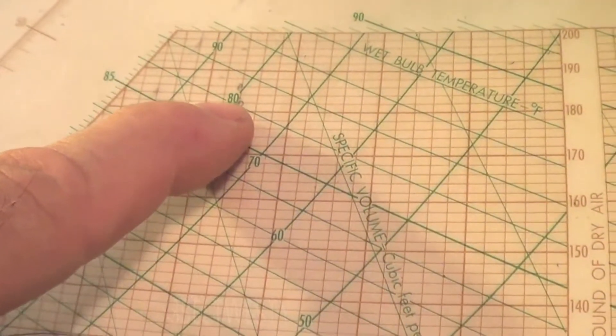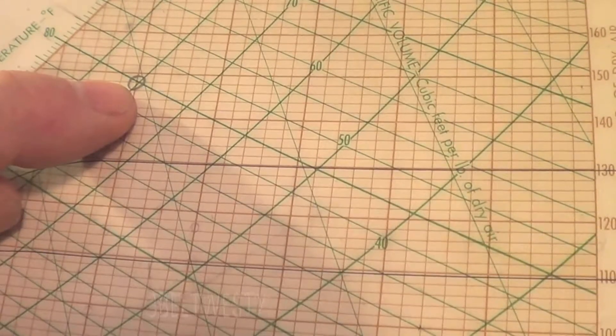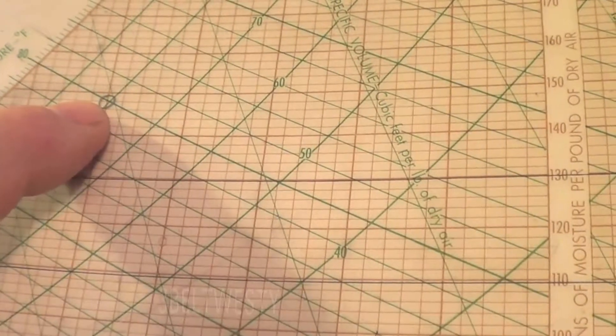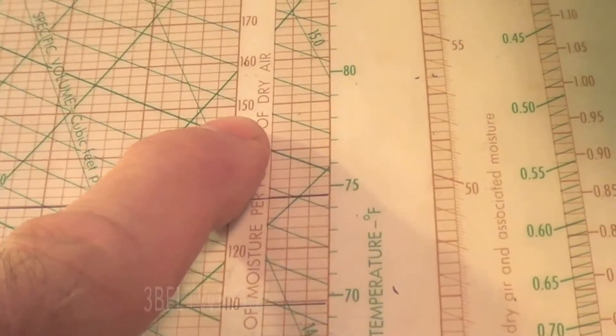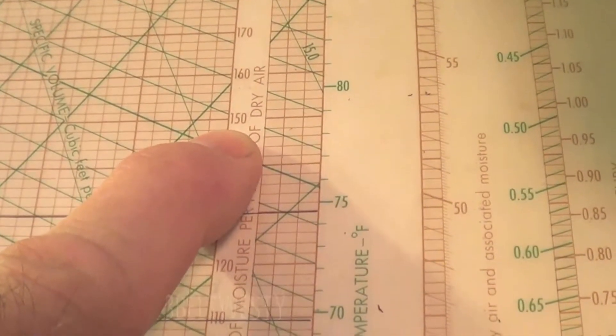What that means is that the air is holding 80% of the moisture it could hold compared to saturation. If you go over here and extend the line over, it's got 150 grains of moisture per pound.